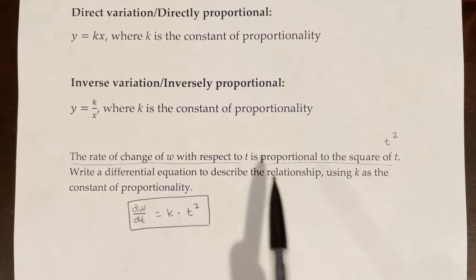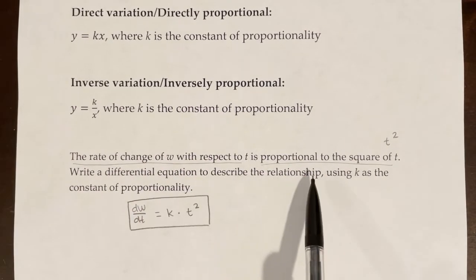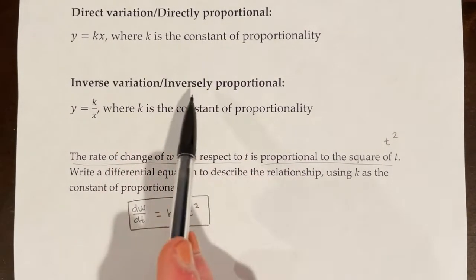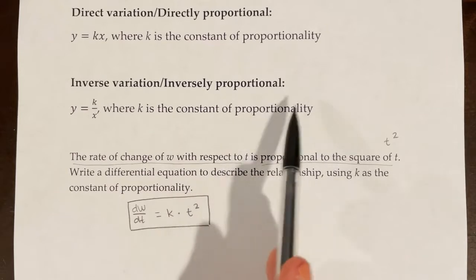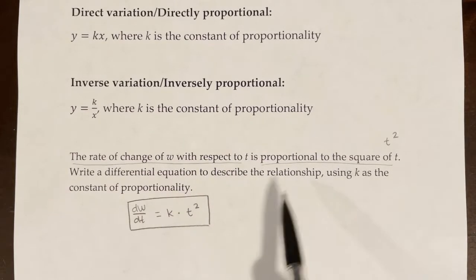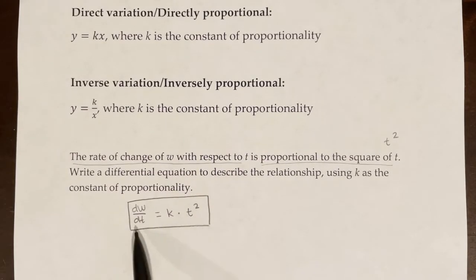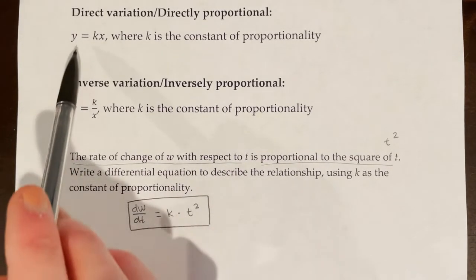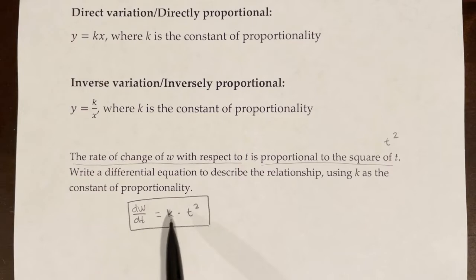When it says that something is proportional, we default to that meaning directly proportional, not inversely proportional. So because we knew that dw/dt was directly proportional to the square of t, we used y equals k times this.